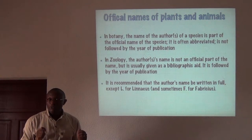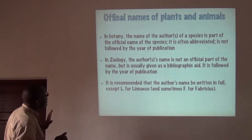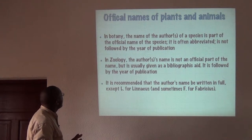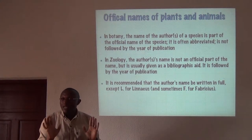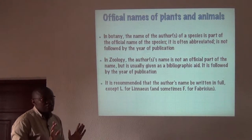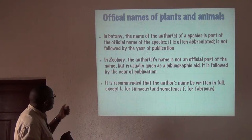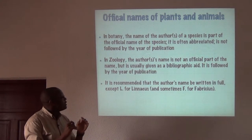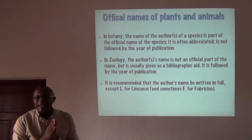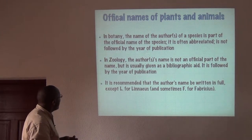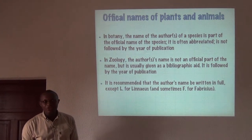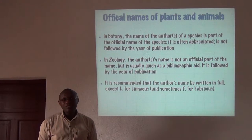Let's talk briefly about the official names of animals and plants. In botany, the name of the author of a species is part of the official name of the species — it is often abbreviated but not often accompanied by the year of publication. In zoology, the author's name is not considered an official part of the name, but is usually given as a bibliographic aid, and when given, it is often followed by the year of publication. It is recommended that the author's name be written in full, except L, which stands for Linnaeus, and sometimes F, which stands for Fabricius.